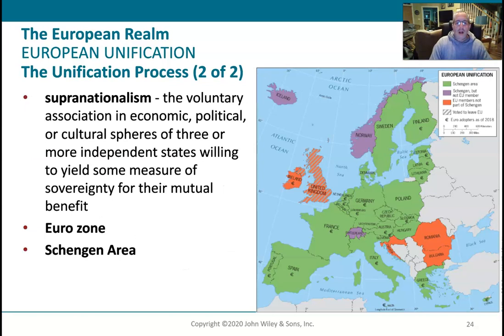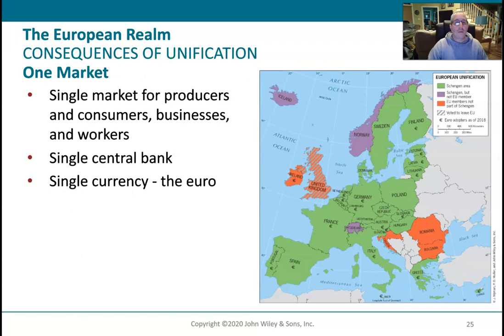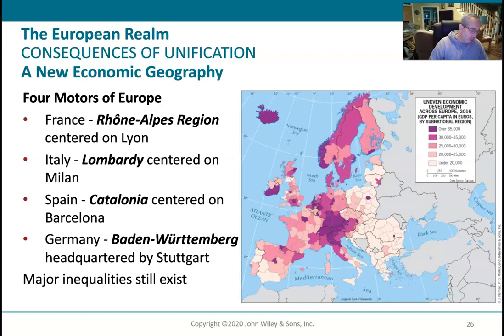I'll let you read about the differences in the Eurozone and the Schengen area in your textbook, because it would take more time than I have to explain — just be sure to read those because you'll have questions on them in your assignments. When you have a common union like the European Union with a central bank, a single currency like the euro, and free and open trade, that's a positive thing as long as all countries benefit equally. But you can see on this GDP map that equity is not great in Europe.